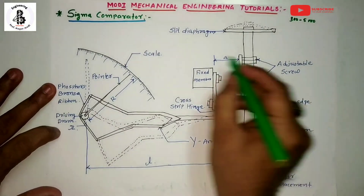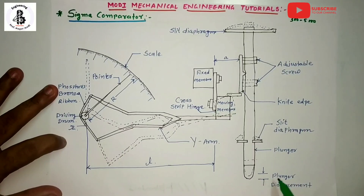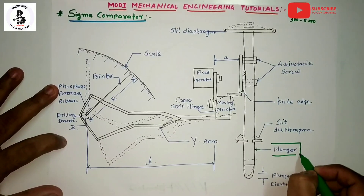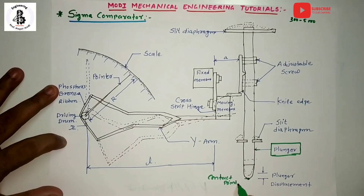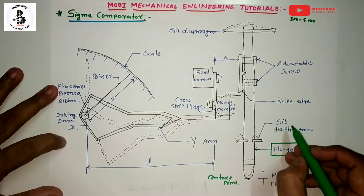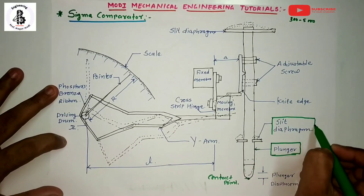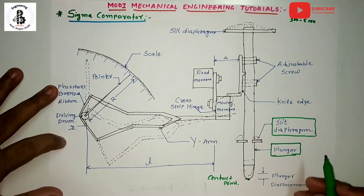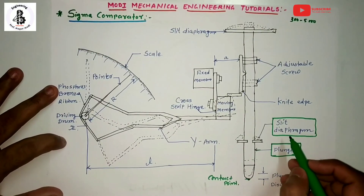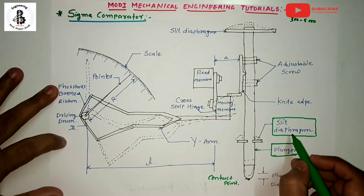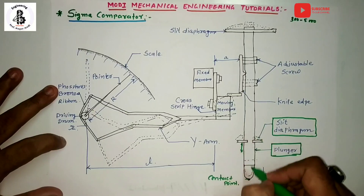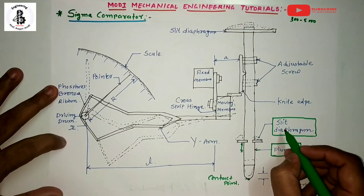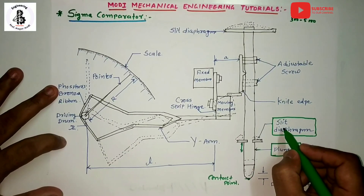You can see the construction of the Sigma comparator. Starting with the plunger, which consists of the contact point used for indication during measurement. This plunger is supported between the slit diaphragm, which is the second important part. The slit diaphragm provides frictionless linear movement for the plunger, allowing it to move up and down in a reciprocating motion.